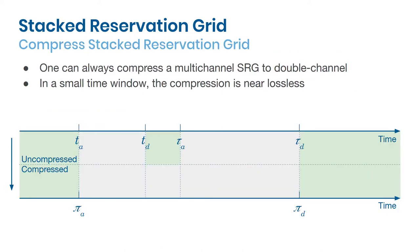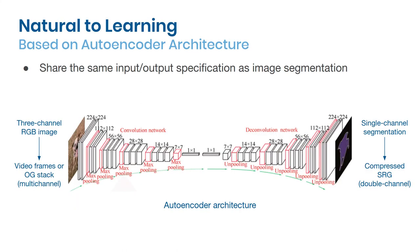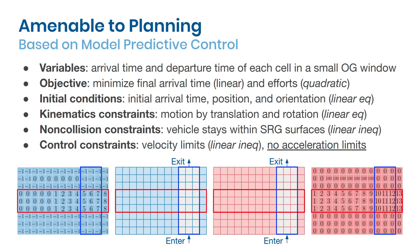By taking the mean across the arrival channels and the max across the departure channels, we are able to compress a multi-channel SRG into a double-channel compressed SRG. Compressed SRG can work very efficiently with both perception and planning modules. It finds natural integration into any modern computer vision neural networks through a tensor-to-tensor autoencoder. It is also easy to use for planning, acting as part of the non-collision constraints in a standard MPC formulation.